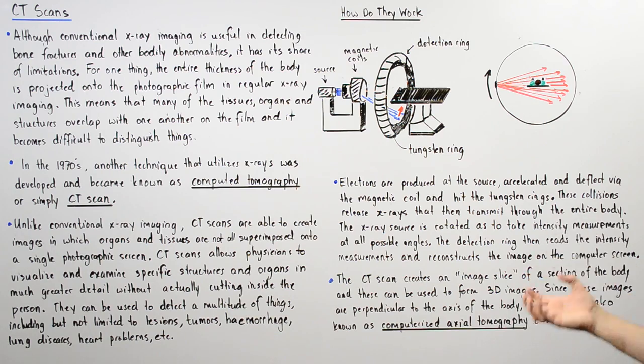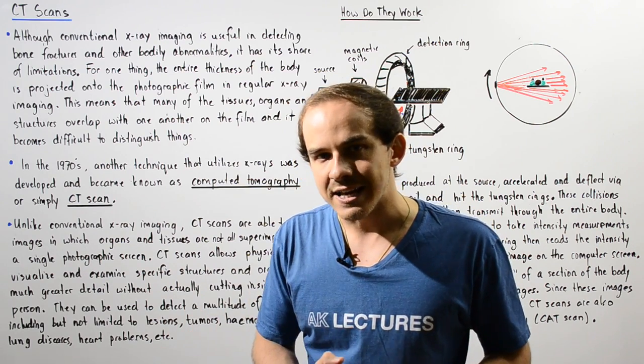The x-ray source is rotated to take intensity measurements, intensity of those x-rays, at all possible angles. The detection ring then reads the intensity measurements and reconstructs the image on a computer screen. Those x-rays that are absorbed by the body have a lower intensity, while those x-rays that are not absorbed by the body hit that detection ring with a high intensity.